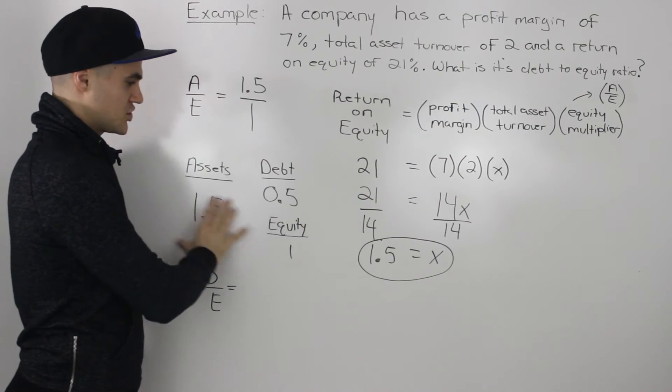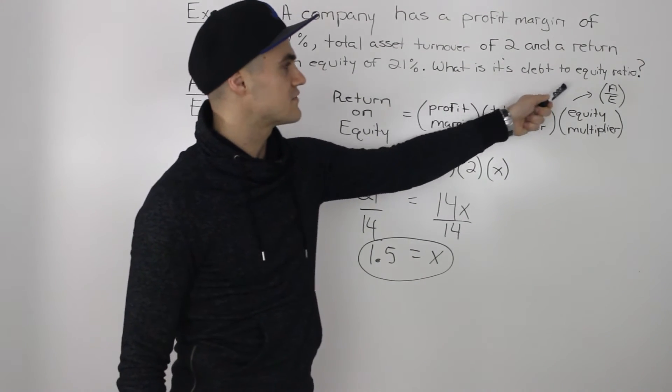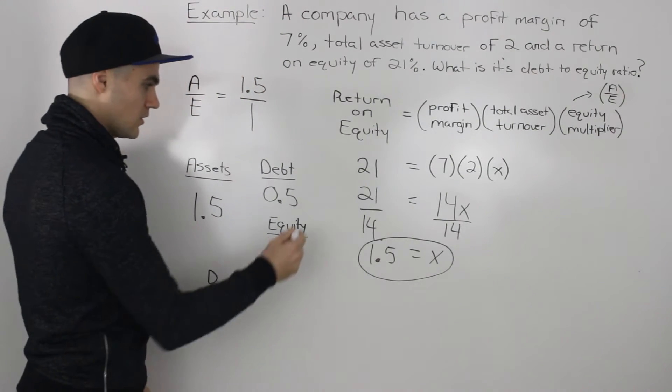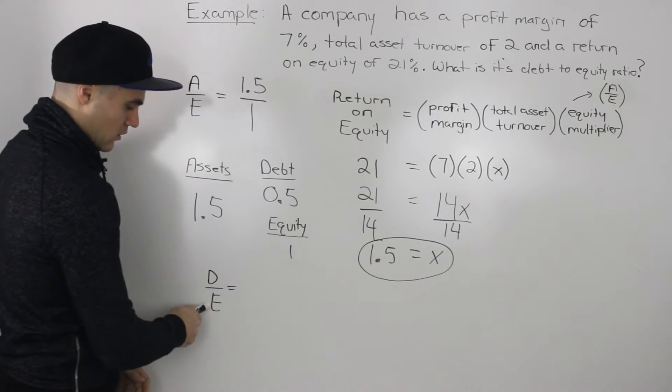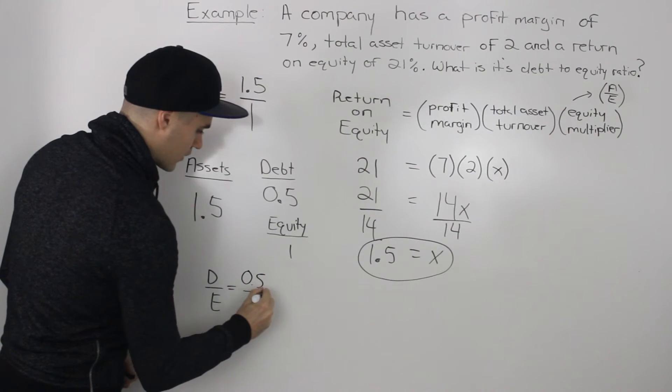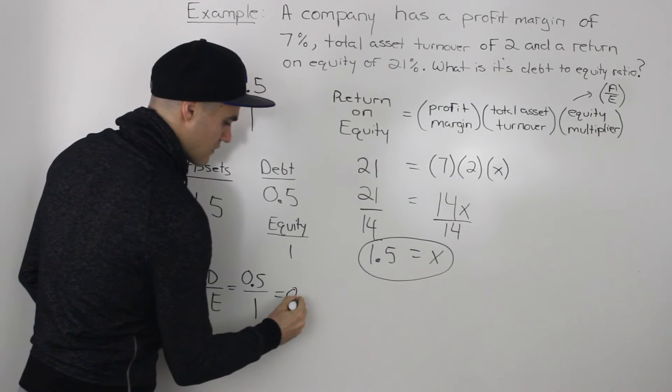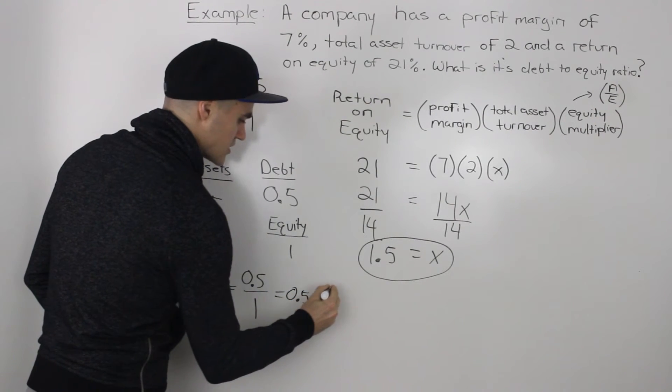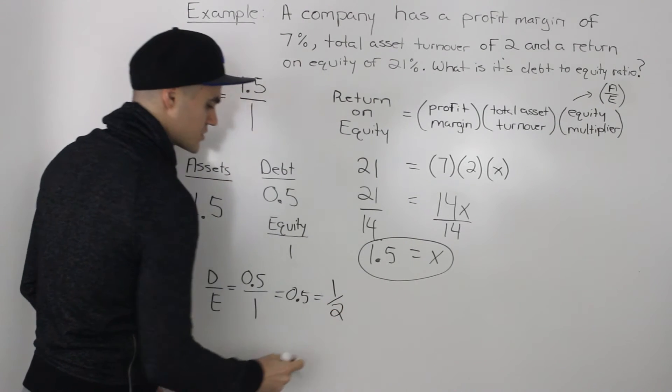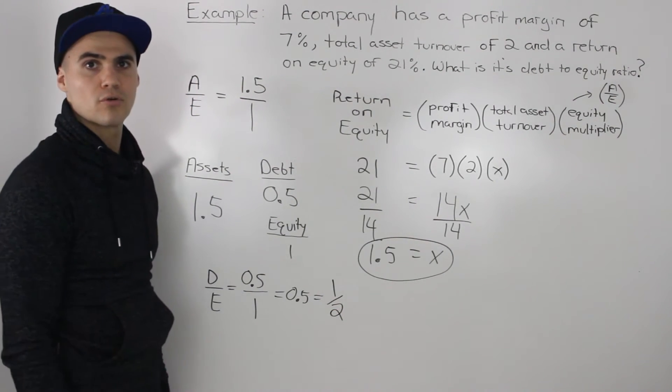And now from this mini balance sheet that we made, we can figure out what we're asked to find. So we're asked to find the debt to equity ratio. Well, the debt over equity would be 0.5 over 1. And 0.5 over 1 is just 0.5, or if in fractions, it's the same as 1 over 2. So our debt to equity ratio is either 0.5 or 1 over 2. Both of those are equivalent.